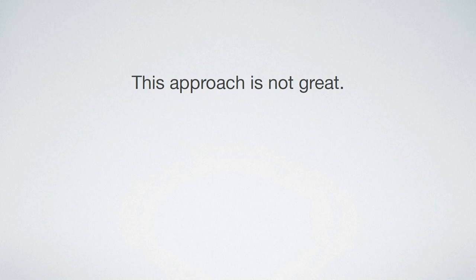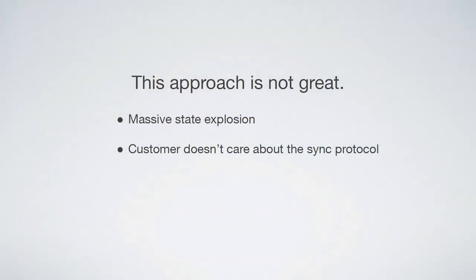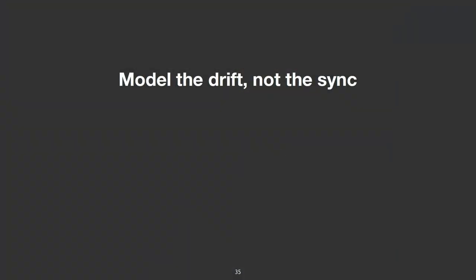This isn't all that good of an approach, it turns out. It would lead to an incredibly massive state explosion as the clocks vary from each other. This model allows one clock to tick once and then another clock to tick forward a hundred times — there are combinatorial problems with it. But perhaps more importantly, this isn't the important part of it. They don't care about the sync protocol. What they care about is the impact that some failures in this clock synchronization system has on their machine. What we really needed to be doing was modeling the drift itself, not the clock sync system.